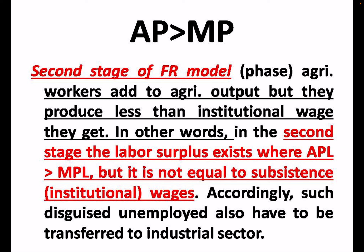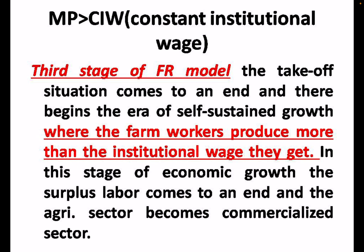The second stage of the Fei-Ranis model is when agriculture workers add to the agriculture output but produce much less than the institutional wage they receive. In other words, labour surplus still exists where the average productivity of labour is more than the marginal productivity of labour, but it is not equal to the subsistence or institutional wage. Since average productivity is more than marginal productivity, such disguised unemployment still has to be transferred to the industrial sector.